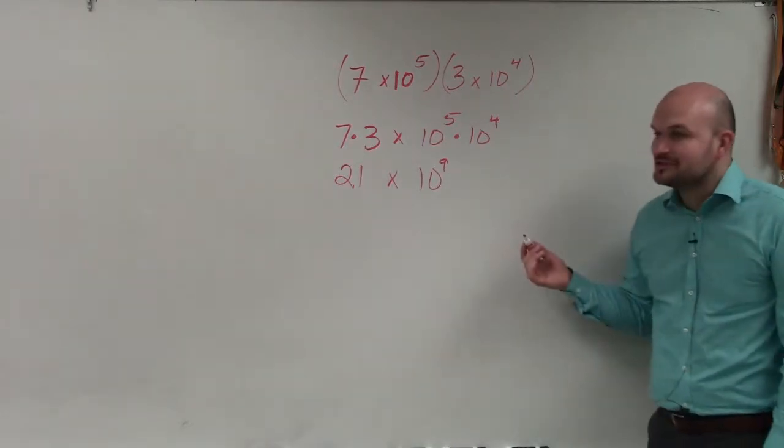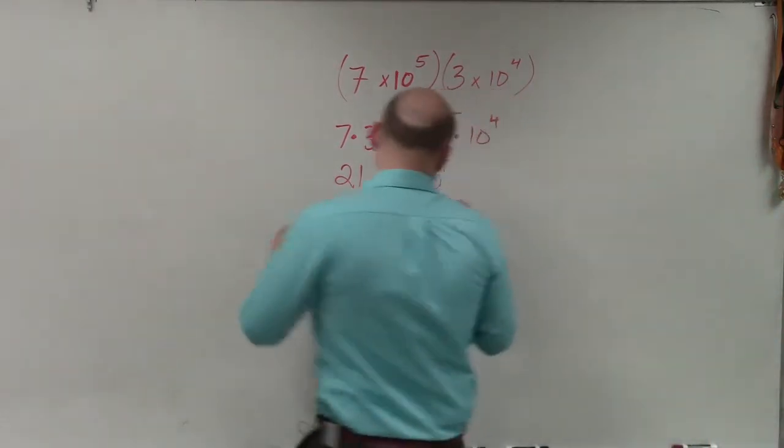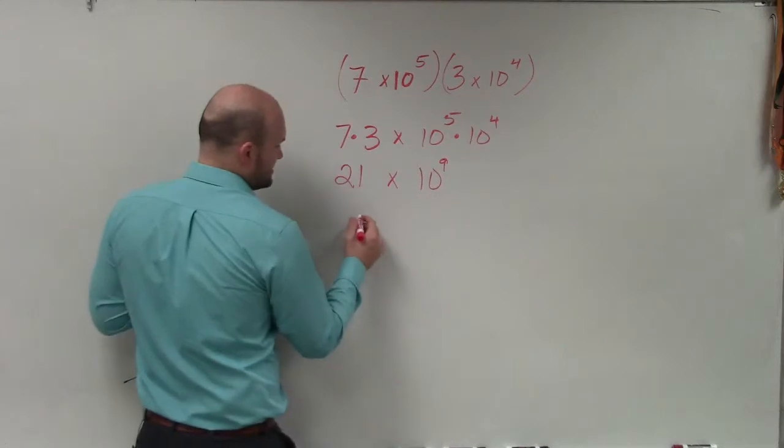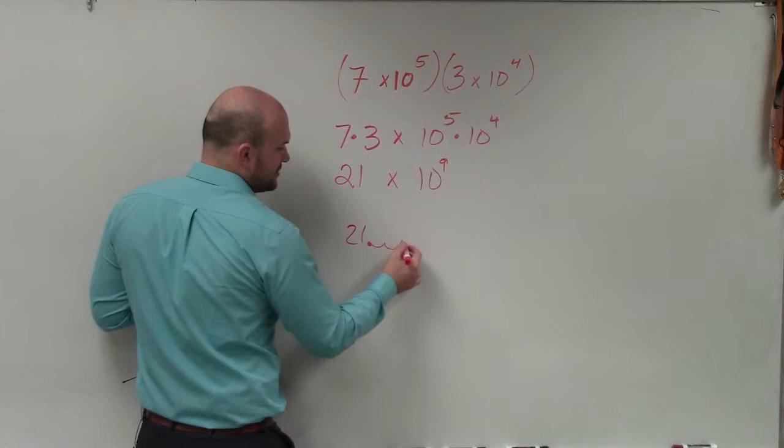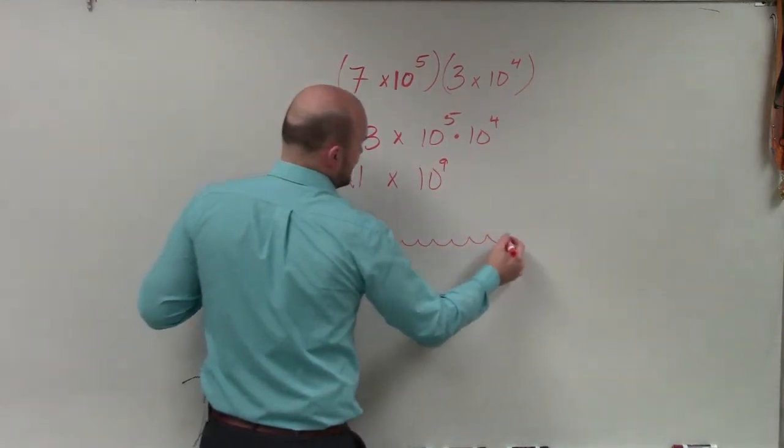Now, the next thing I want to let you guys know is basically this number looks like this: 21 with 9 zeros, right? Because here's the decimal point. So we have 9 zeros: 1, 2, 3, 4, 5, 6, 7, 8, 9.